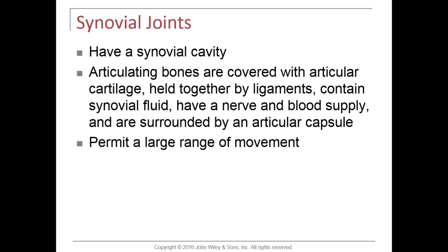If ligaments are on the outside of the capsule, they're called extracapsular ligaments. Inside the joint cavity, synovial fluid lubricates the adjoining bones and provides nourishment and shock absorption. There is a nerve and blood supply going to the outside of the synovial joint at the articular capsule surrounding the adjoining bones. Synovial joints allow a large range of movement relative to other joint types.